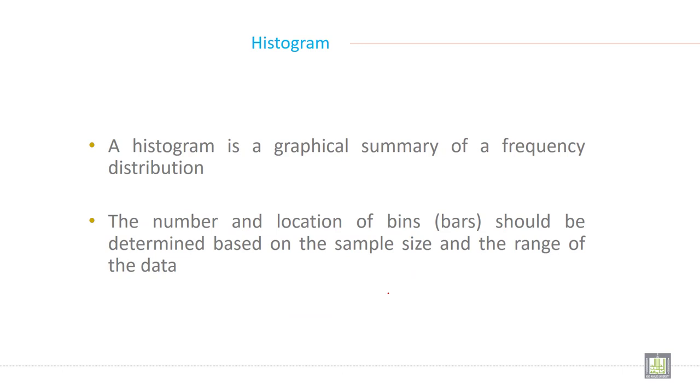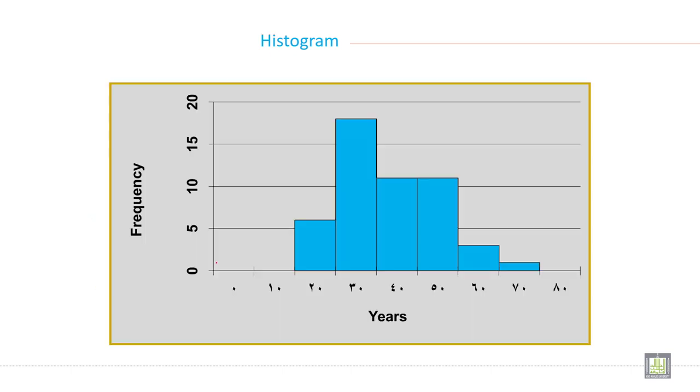What is histogram? As we know, a histogram is a graphical summary of a frequency distribution. The number and location of bar should be determined based on the sample size and the range of the data. This is the example of histogram. On one axis, it is frequency and another axis, it is class.